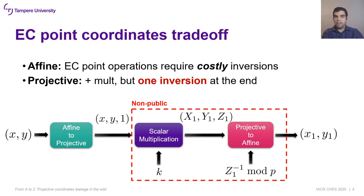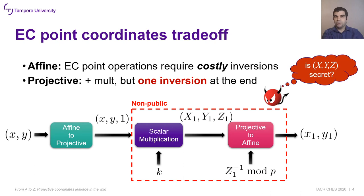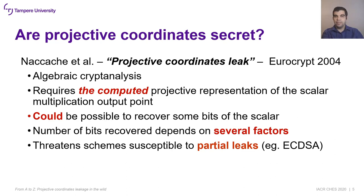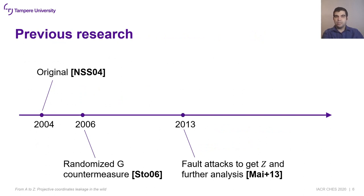However, implementation-based attacks can be used to retrieve this information. But is the computed projected representation of the point secret after all? This question was answered by Nakash et al. in 2004. They proposed a very clever algebraic attack independent of how the projected coordinates are retrieved. This attack can be used to recover some bits of the scalar. Thus, it threatens schemes susceptible to partial leaks, like EC-DSA.